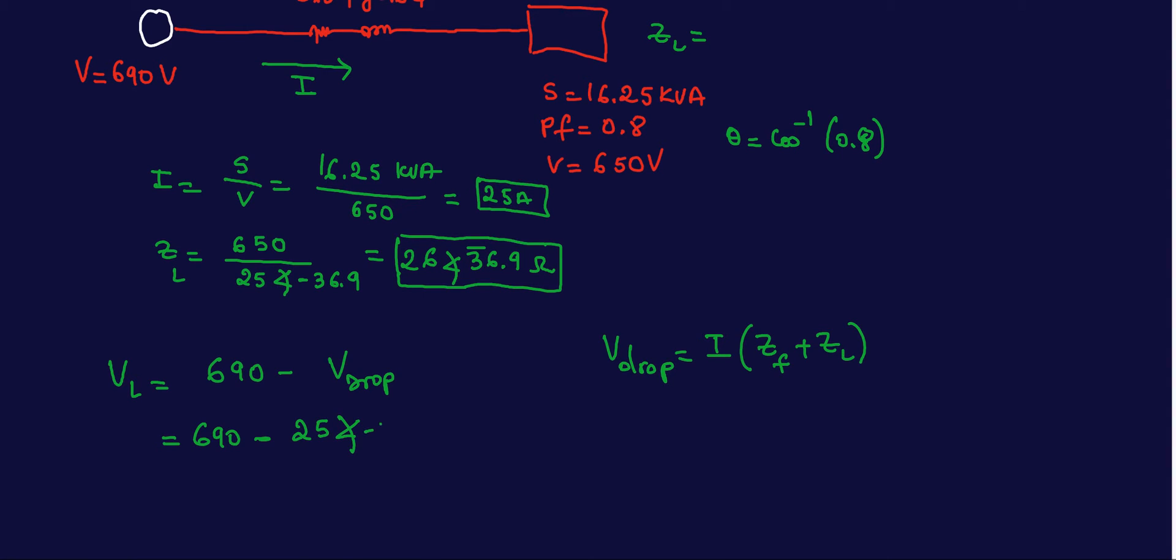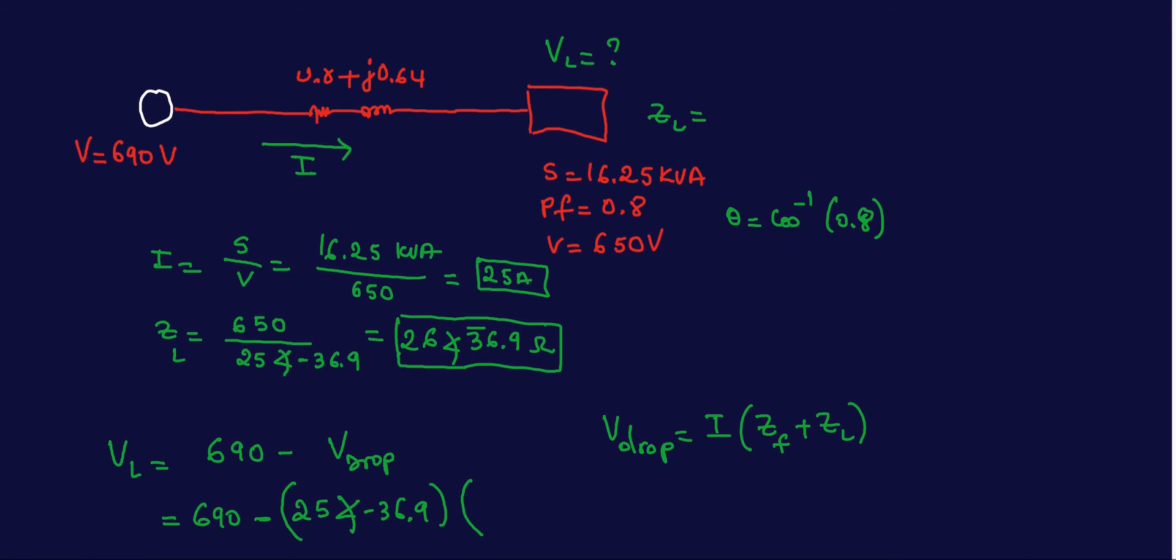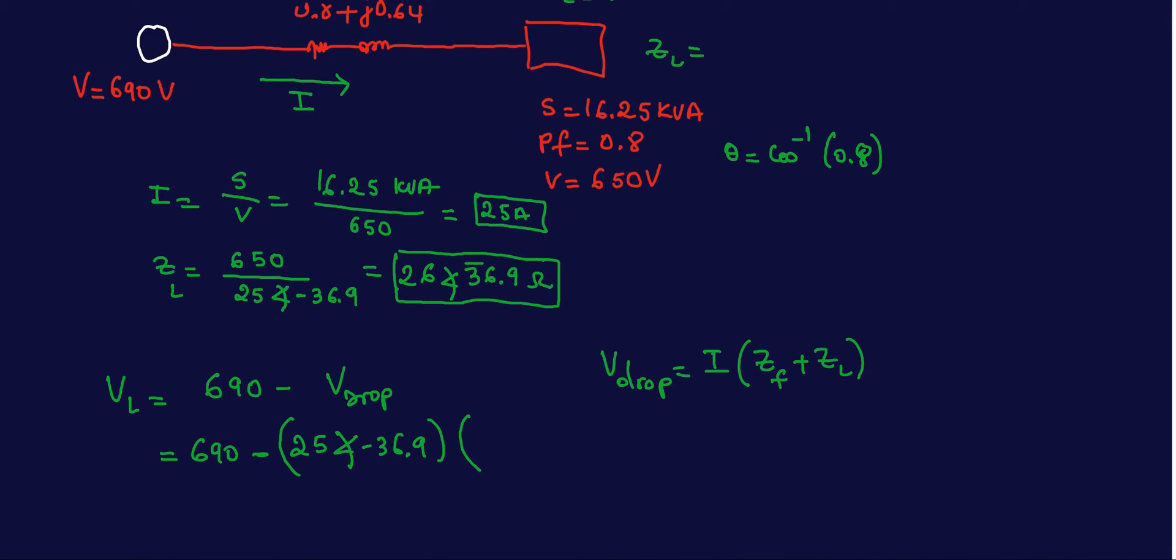With a power factor of minus, lagging. That's my I. And then my voltage is, going back up here, 0.8 plus j0.64, plus Z load, which we already found to be 26 angle 36.9 degrees. You can put this directly into your calculator or convert this to R plus jX form.